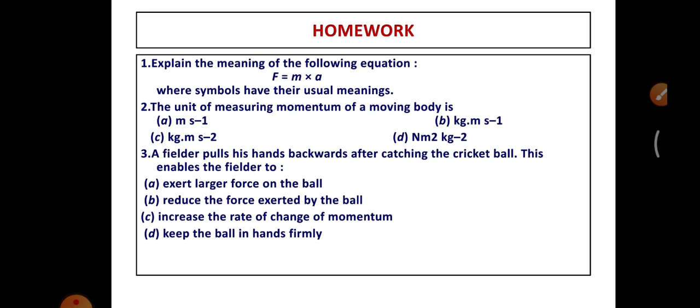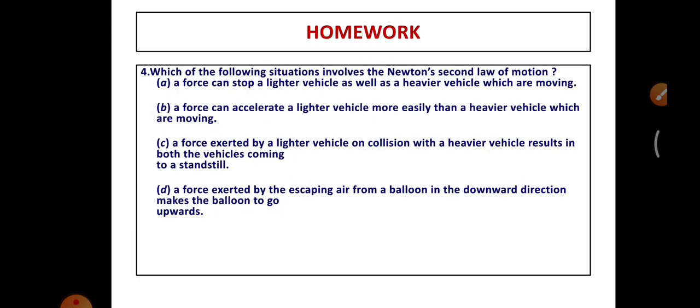Homework questions: 1) Explain the meaning of F = MA where symbols have their usual meanings. 2) The unit of measuring momentum of a moving body is given — choose the correct option. 3) A fielder pulls his hands backward after catching the cricket ball. This enables the fielder to... choose the correct option from the four. 4) Which of the following situations involves Newton's Second Law of Motion? Read the four options and select the correct one.